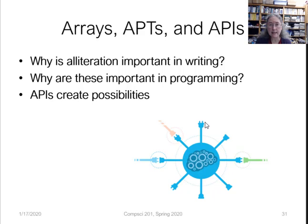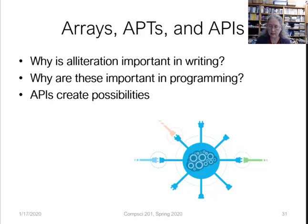We're doing arrays, APTs, and APIs. Alliteration is an important linguistic thing in writing — that's why we have arrays, APTs, and APIs, they all start with the letter A and they're all very important in programming. Arrays we've already talked about. APTs are going to help you with lots of short code to practice and learn. APIs are going to create possibilities so you don't have to write all the code — you can use code that other people have written to create something spectacular faster.